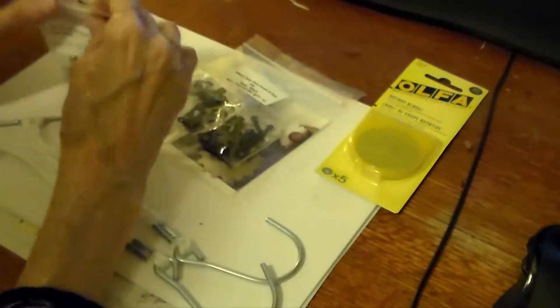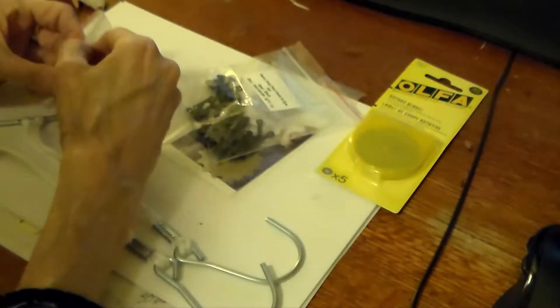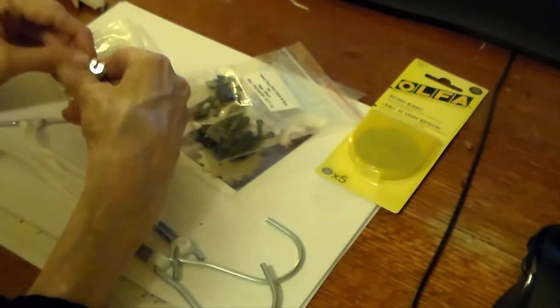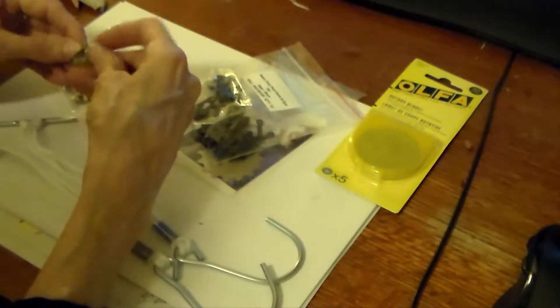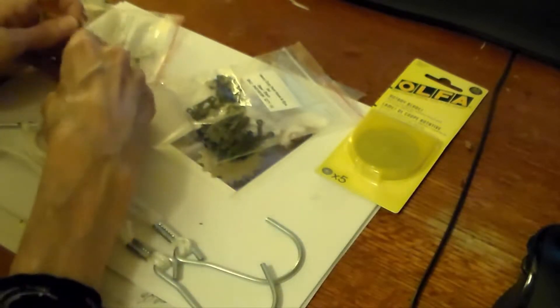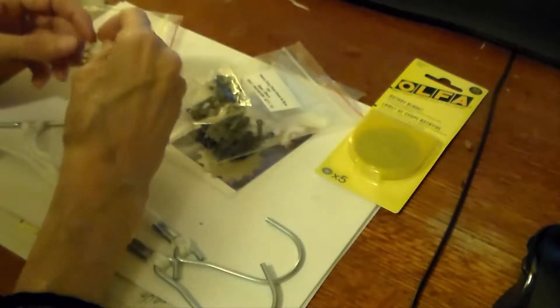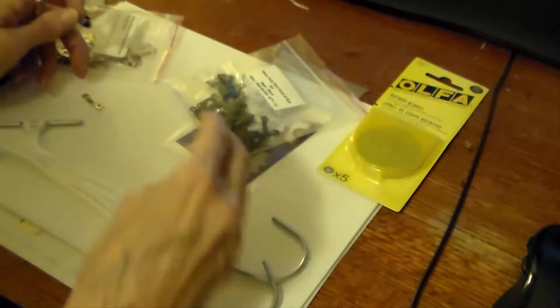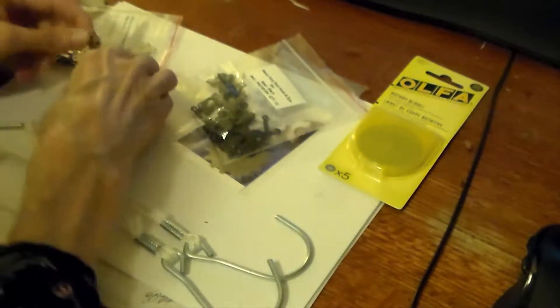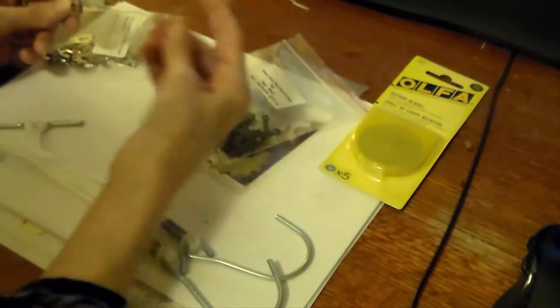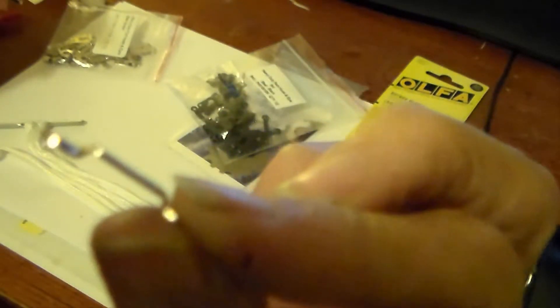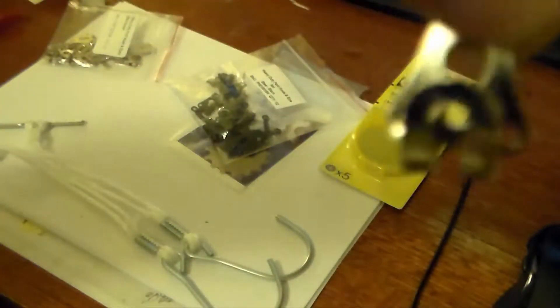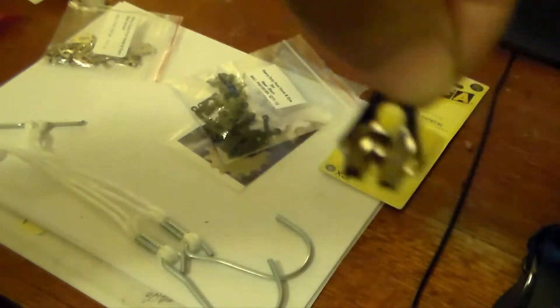I also got three dozen each of a silver tone and a black tone of these trouser hook and eyes. Now these are heavier duty than the other hook and eyes. Usually even whenever you buy a trouser hook and eye like at Hancock's or Joann's, they do have this eye part but their hook part is different.